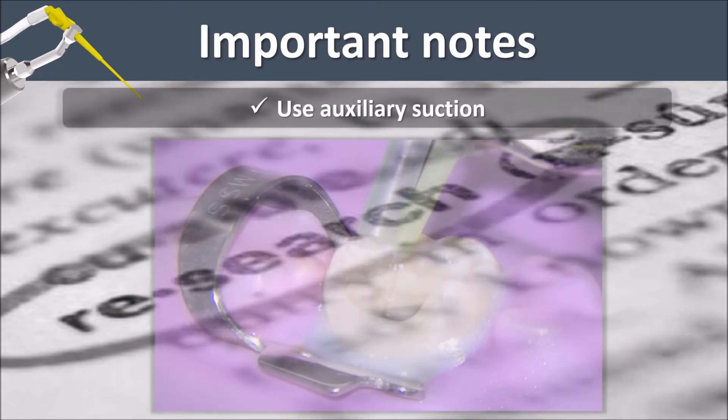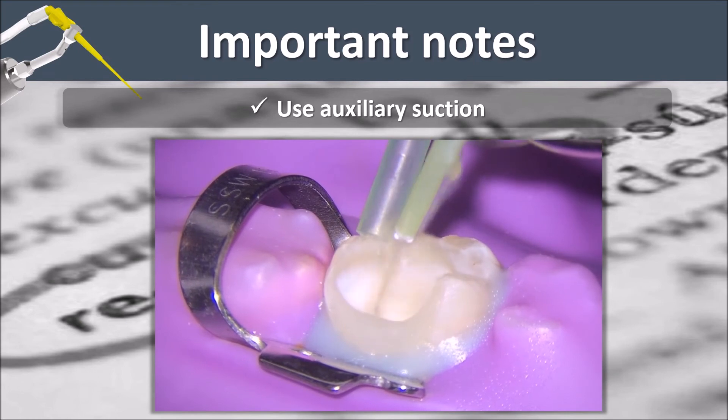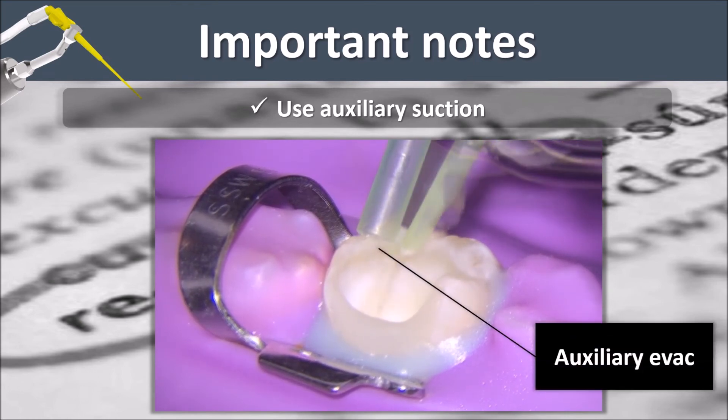The amount of irrigation will always be greater than the suction capacity of the cannula. Therefore, always use auxiliary vac at the level of the access opening.